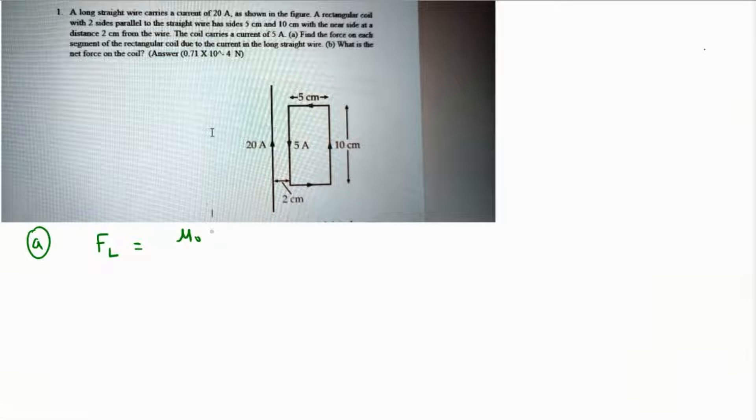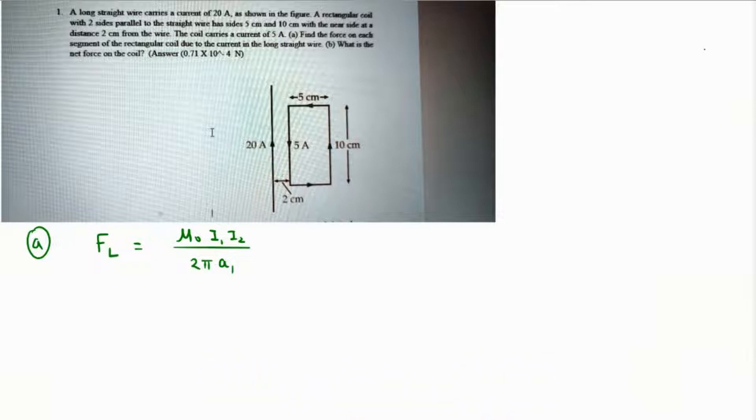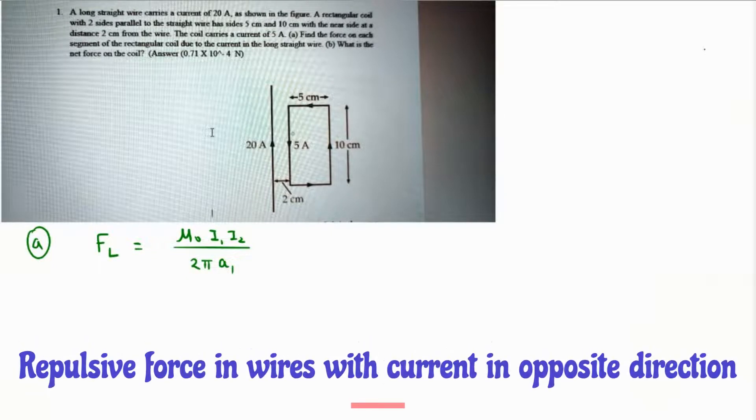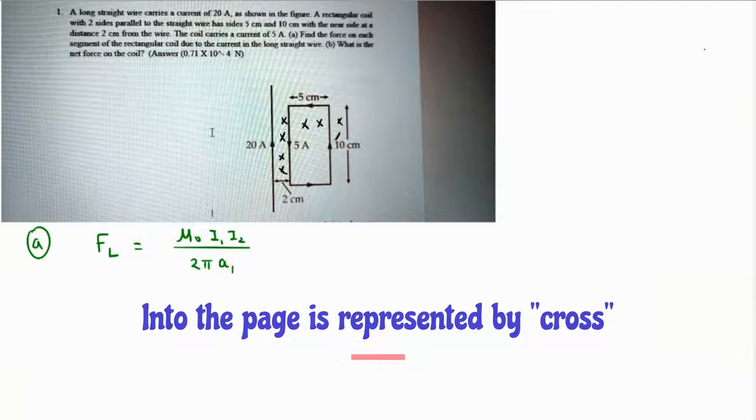Let's find the individual forces first — the force on the leftmost part. We need the force due to two current-carrying wires. There's a direct formula: μ₀i₁i₂ / 2πa, where a₁ is the perpendicular distance between the two wires. Since they are in opposite directions, the force is going to be repulsive in nature. Using the right-hand curl rule, putting the thumb towards the current and curling the fingers, the magnetic field is into the page for the complete area.